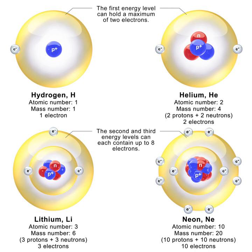The finite size of the neutron and its magnetic moment indicates that the neutron is a composite particle, as opposed to being an elementary particle. A neutron contains two down quarks with charge −⅓e and one up quark with charge +⅔e. Like protons, the quarks of the neutron are held together by the strong force, mediated by gluons. The nuclear force results from secondary effects of the more fundamental strong force.